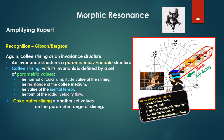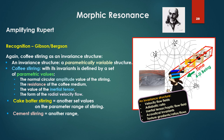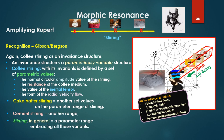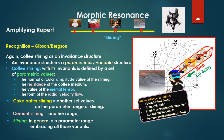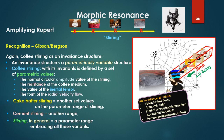Cake batter stirring is another set of values on these various parameter ranges — in this case a much bigger amplitude of circular motion, far greater resistance. Cement stirring, yet another point on the range, far greater resistance. But stirring in general involves a parameter range embracing all these invariants, or a set of dimensions of ranges. Coffee stirring is one spot on this continuum, cake batter stirring another — one dimension could be resistance, etc. Stirring in general covers this entire range.